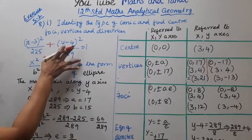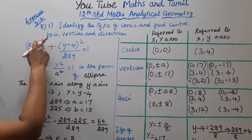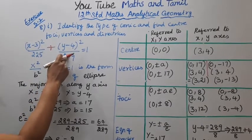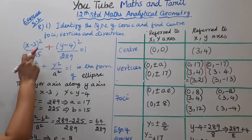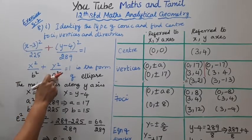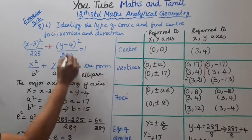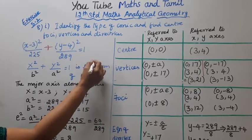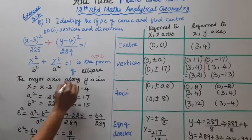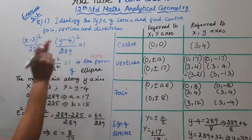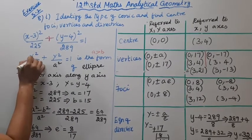For the ellipse, the major axis is along the y-axis since y has the larger denominator. x²/b² + y²/a² = 1 is the form when major axis is along y-axis.